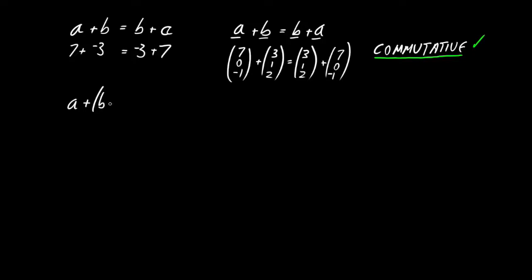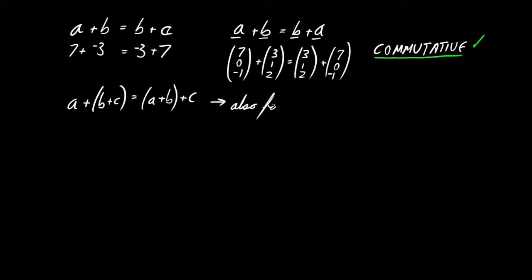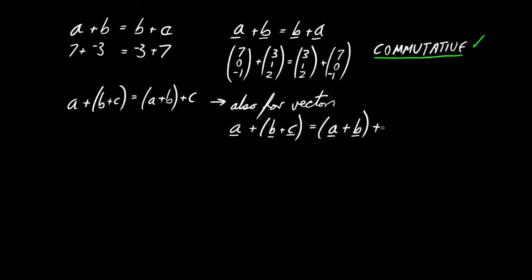How about this second property? If we have three ordinary numbers, then a plus b plus c is the same as a plus (b plus c) — it doesn't matter the order we do them in. Is that going to be true for vectors? Of course it is, because the way we define vector addition is to add each component to the corresponding component — it's just addition. So for vectors, (a plus b) plus c equals a plus (b plus c). This is called being associative.